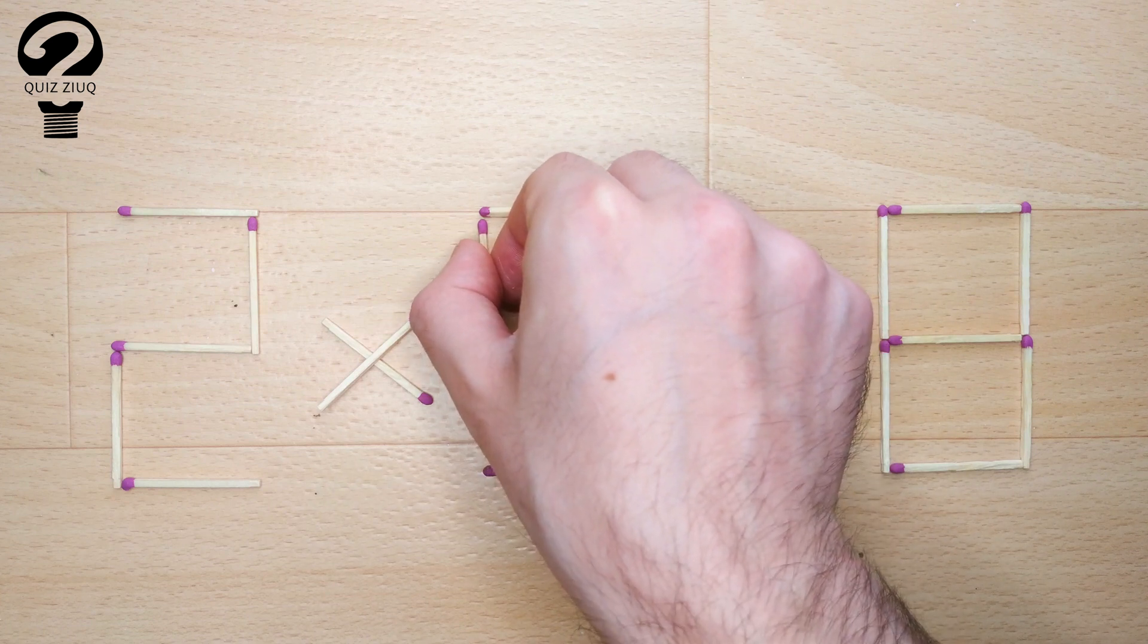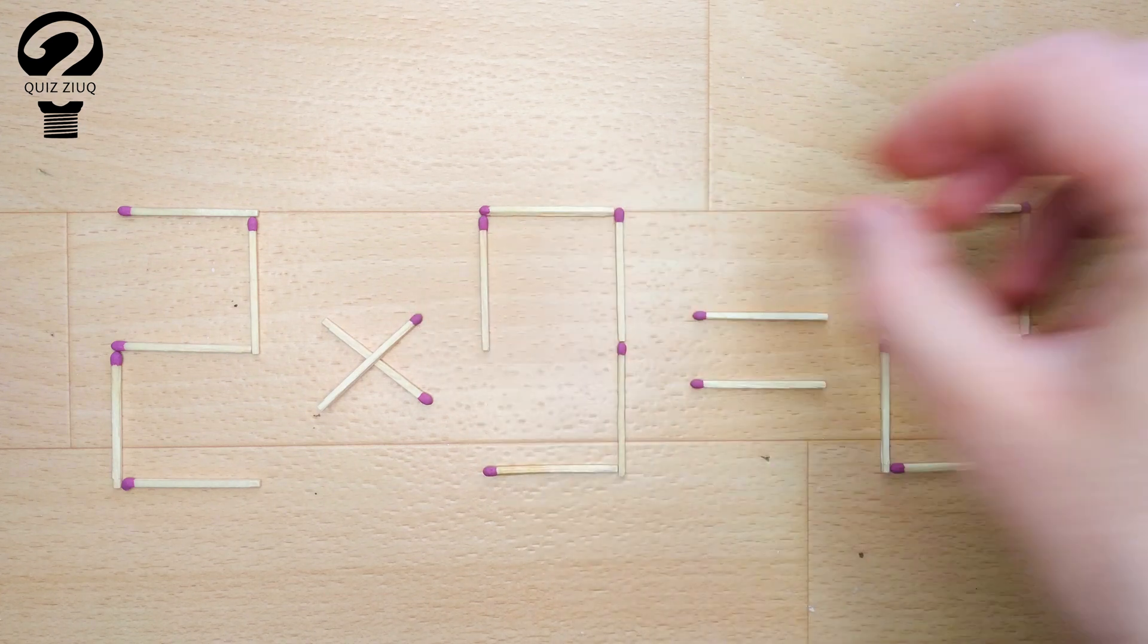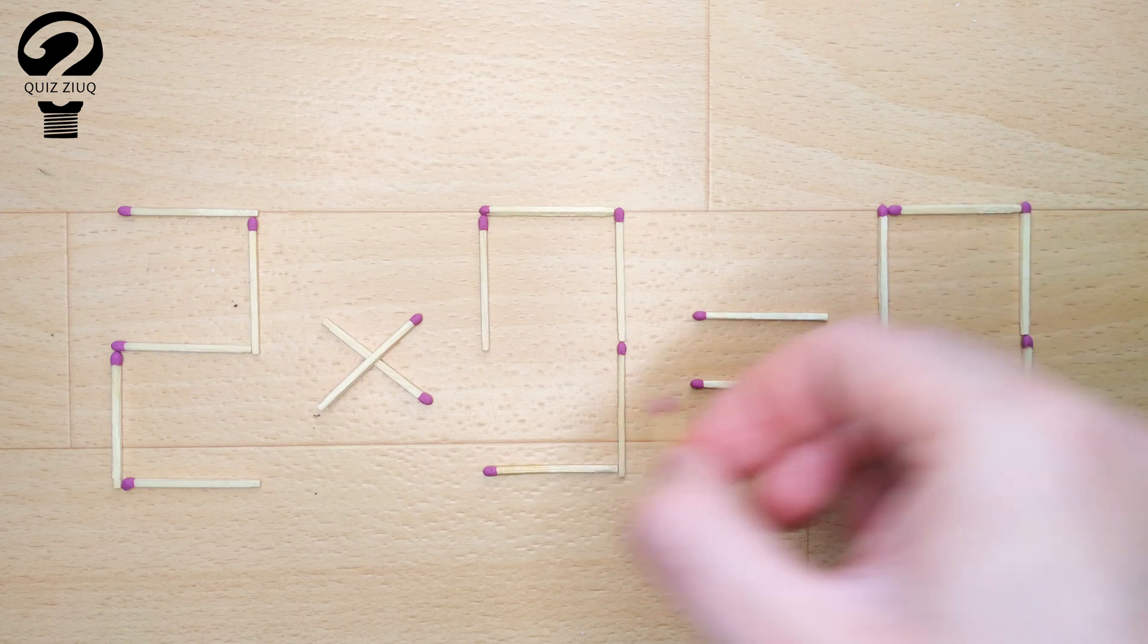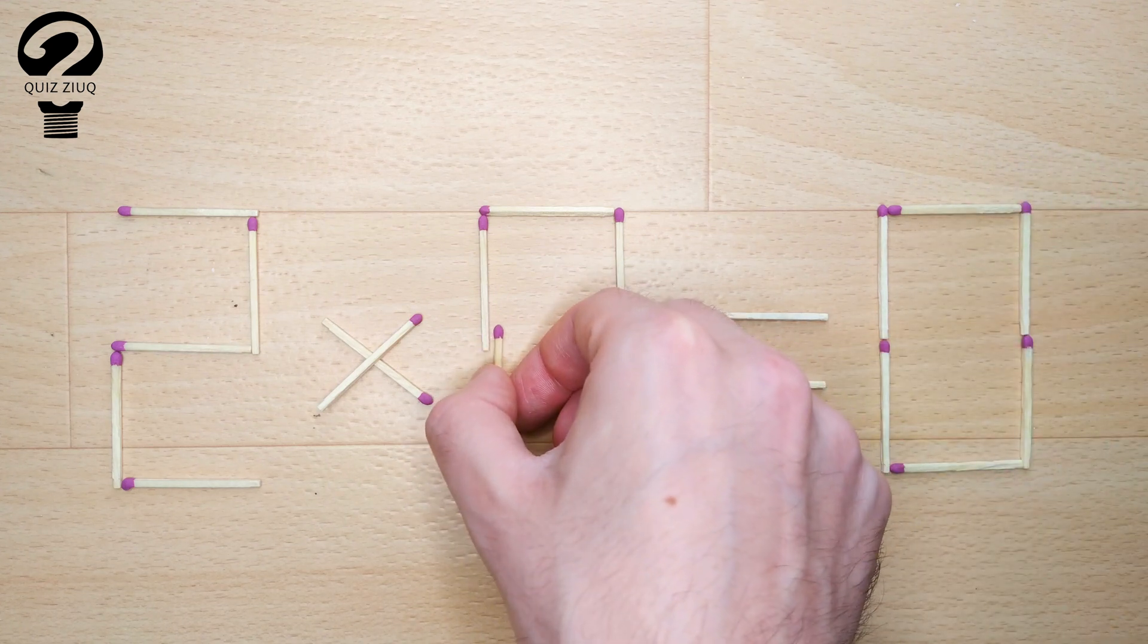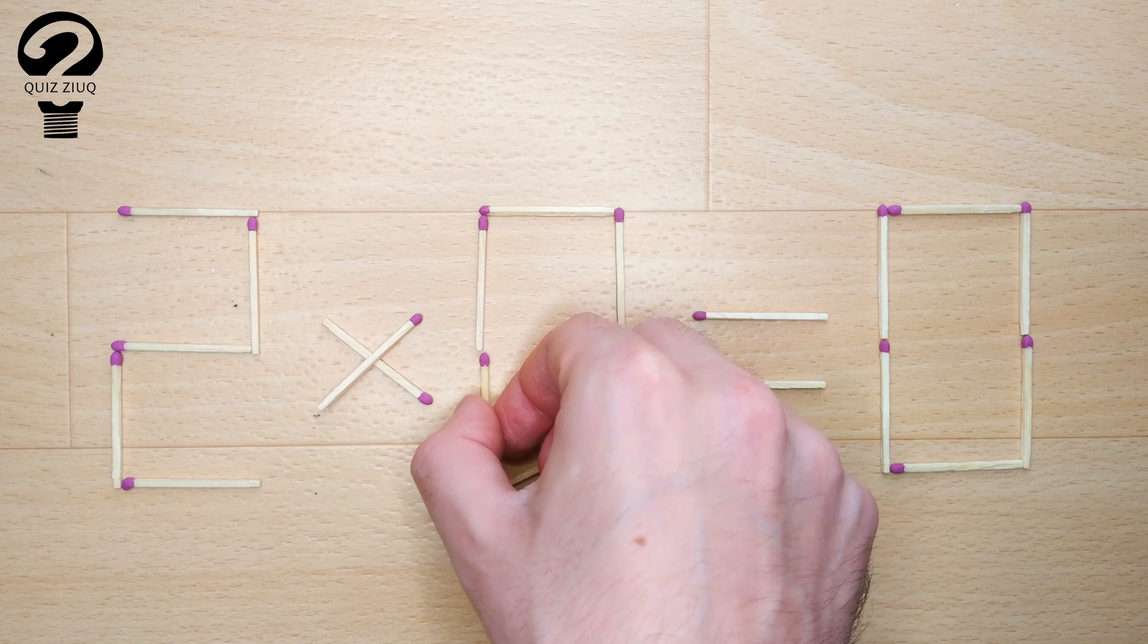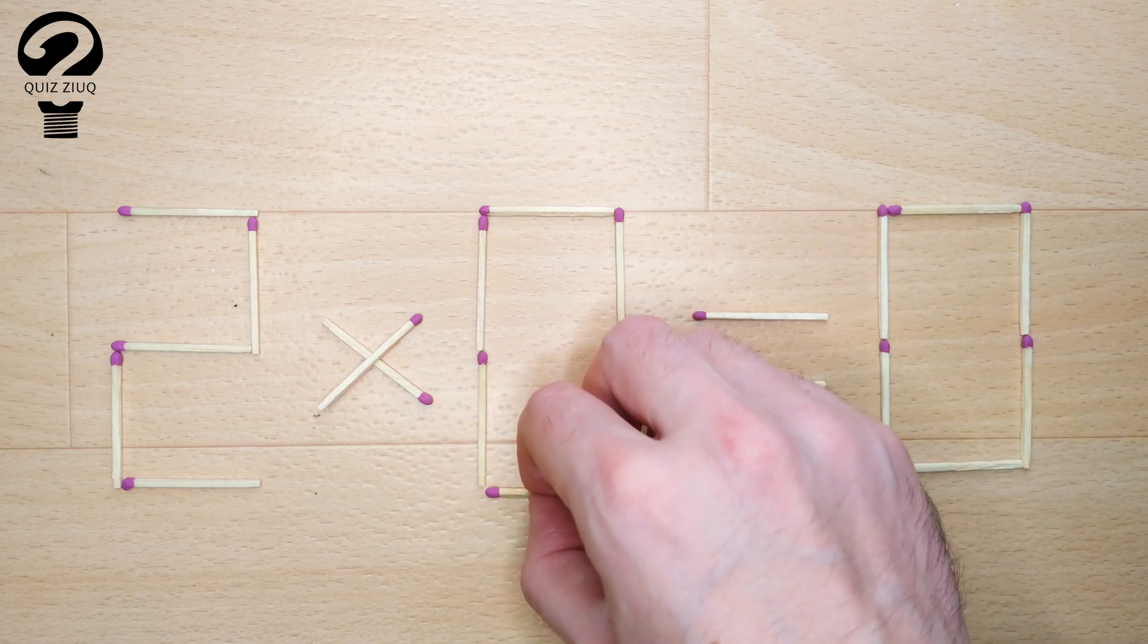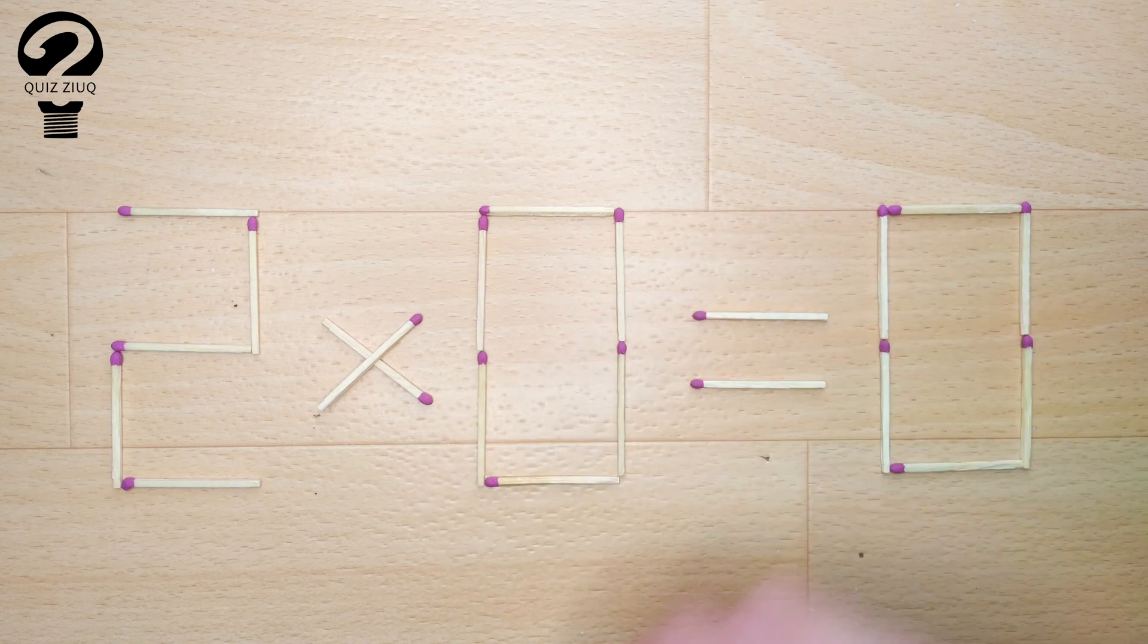And now, when we check the condition 2 times 0 equals 0, 0 equals 0, our equation is correct. The task is completed, the puzzle is solved.